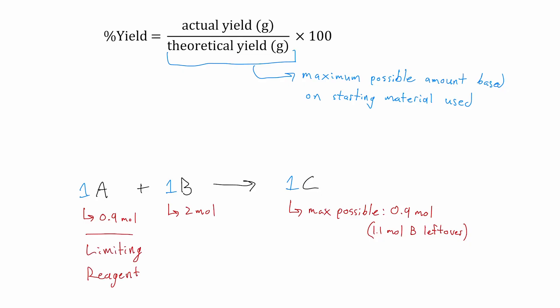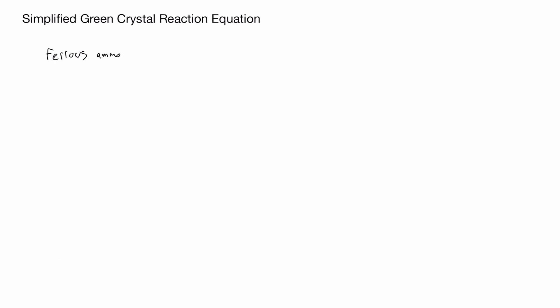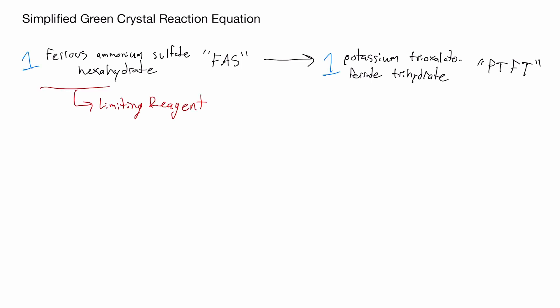Once the maximum possible moles of product are determined, the theoretical yield is calculated by multiplying by the molar mass. In the green crystal experiment, ferrous ammonium sulfate hexahydrate, or FAS, is eventually converted into potassium trioxalato ferrate trihydrate, or PTFT. This experiment was designed so that FAS would be the limiting reagent. There are many other reagents involved, but we'll just look at this simplified equation for clarity.